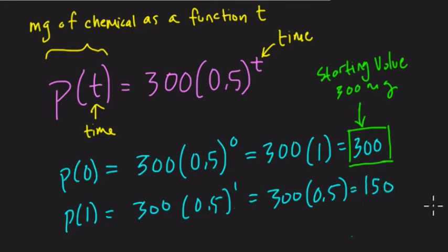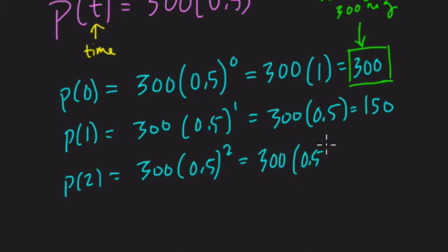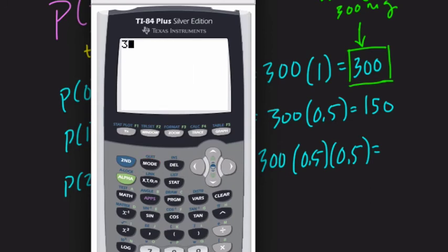Let's do a couple more to understand what the 0.5 really represents. So after two years, we have 300 times 0.5 squared. Now we could calculate 0.5 squared, but I think it's nice to expand it and write 300 times 0.5 times 0.5. And then think about what that means, what that value is.